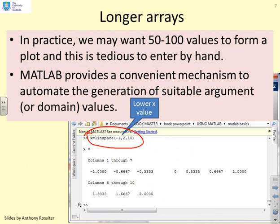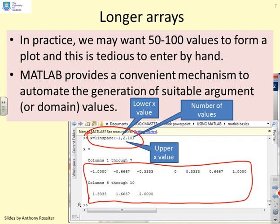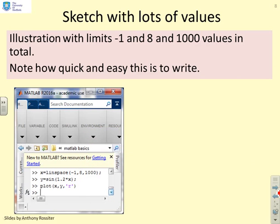What that shortcut says is this: take a lower value of X given as minus 1, take an upper value of X given as 2, and give me 10 values starting from minus 1 and finishing at 2. You'll notice MATLAB's done it. It's given me 10 values equispaced with the lowest minus 1 and the highest 2. So it's given me an array which is 1 by 10. That's a shortcut for forming domain values. In general you might want lots more values, so for example here I'm doing a lower limit of 1 and an upper limit of 8 and I want 1000 values.